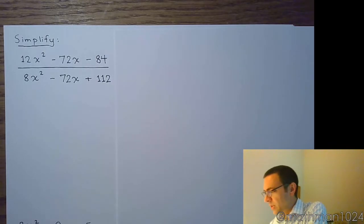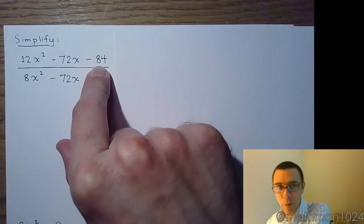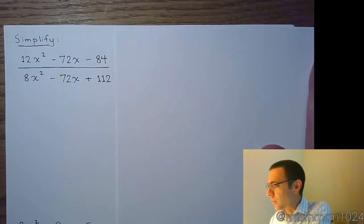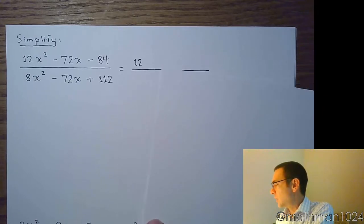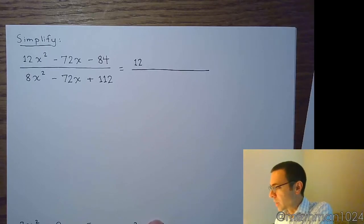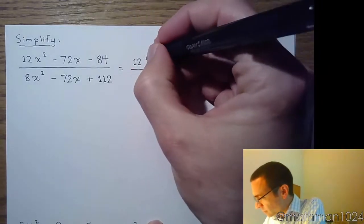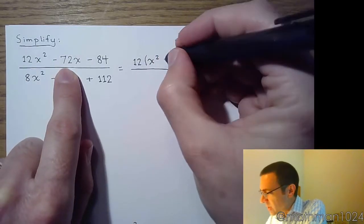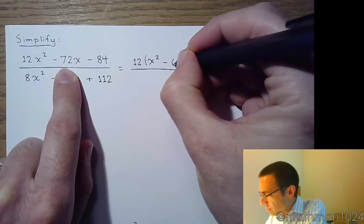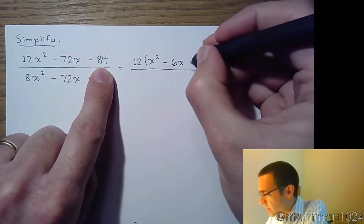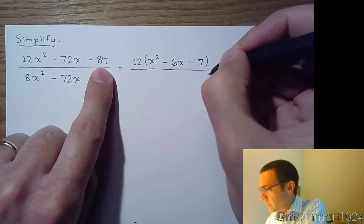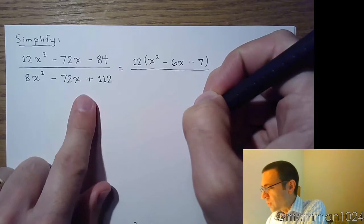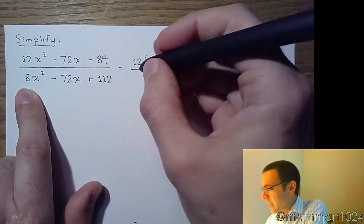Just do this one piece at a time. Starting in the numerator, we can identify there's a common factor. We have 12 as the common factor for the numerator. So we factor out the 12, and then we're left with x squared. 12 goes into 72 six times, so minus 6x, and 12 goes into 84 seven times, so we have minus 7. In the denominator, there's a common factor that goes into all three of these, and that common factor is 8.